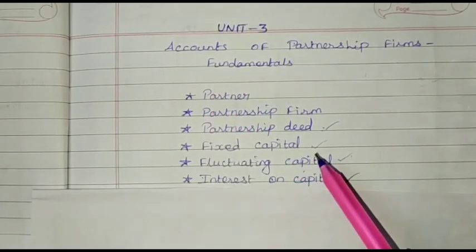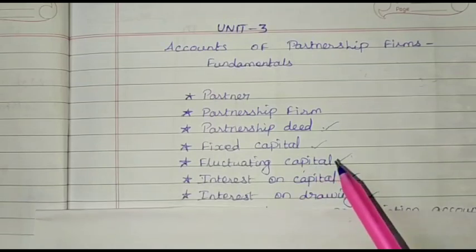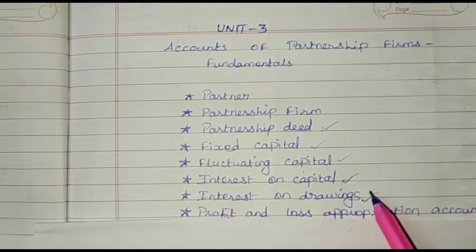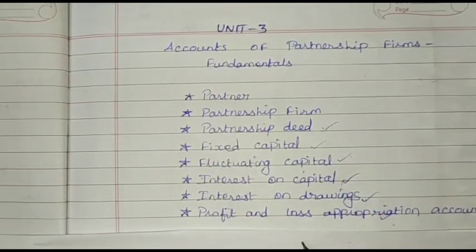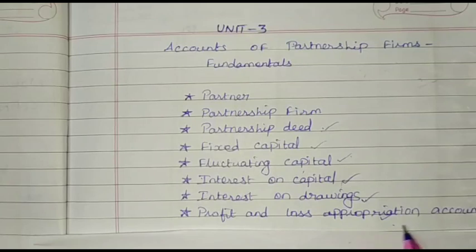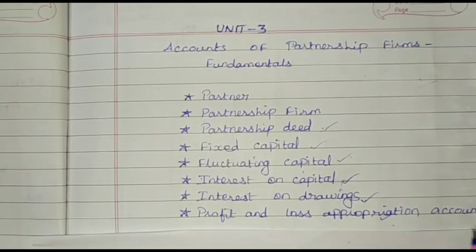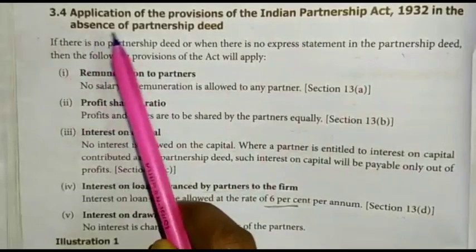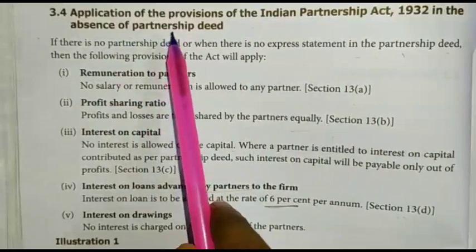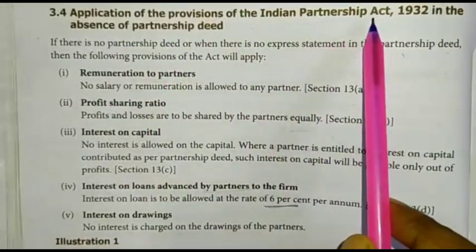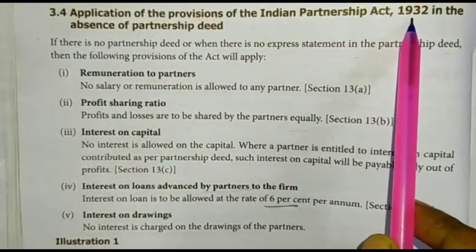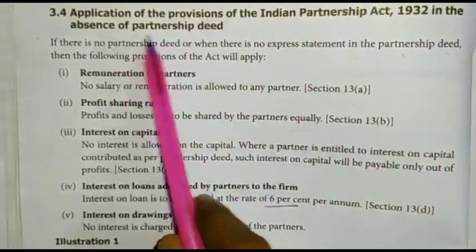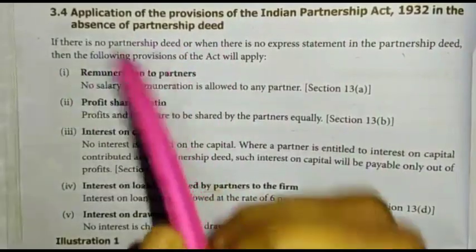The topics covered in this chapter include: fixed capital, fluctuating capital, interest on capital, interest on drawings, profit and loss appropriation account. First one: application of the provisions of the Indian Partnership Act 1932 in the absence of a partnership deed.